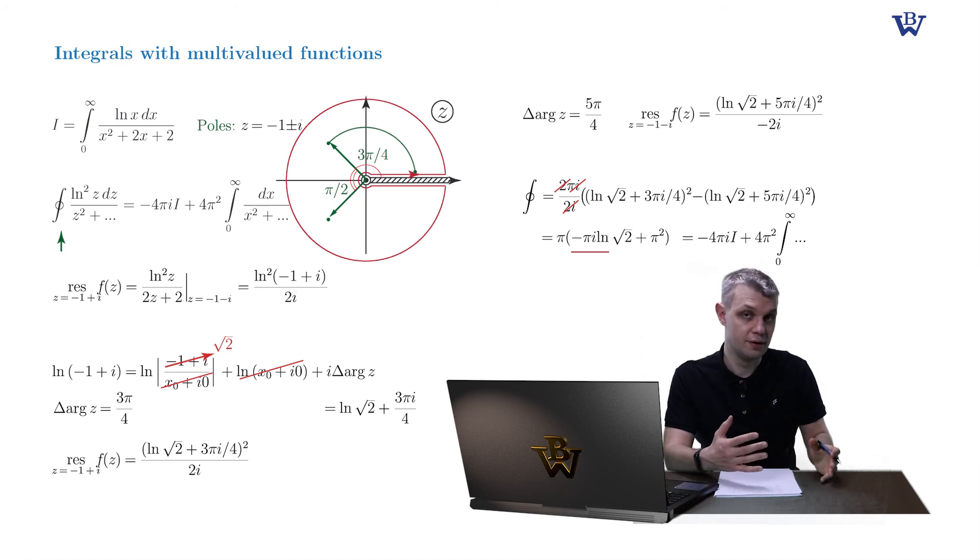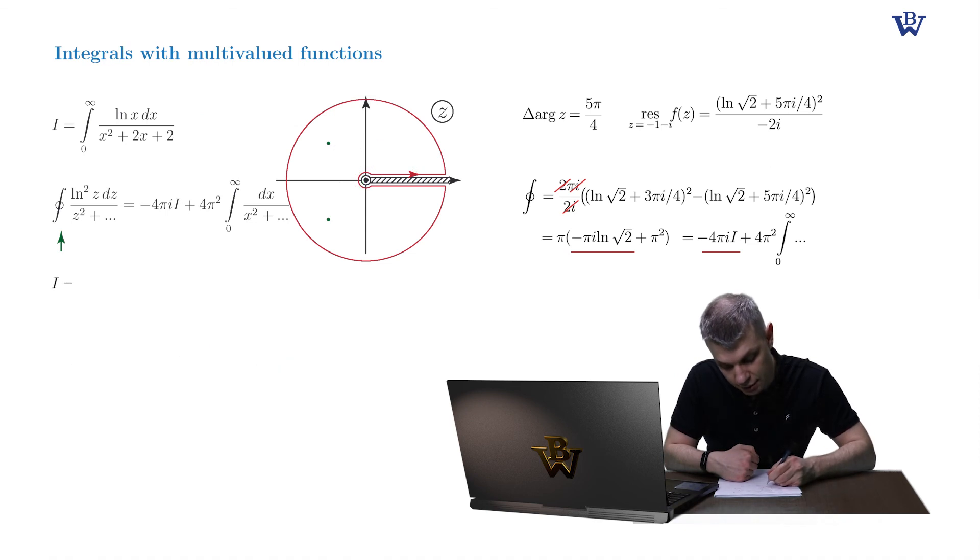So equating now the imaginary parts of this left-hand side and right-hand side we obtain our original integral which is simply pi by 4 times the logarithm of square root of 2.